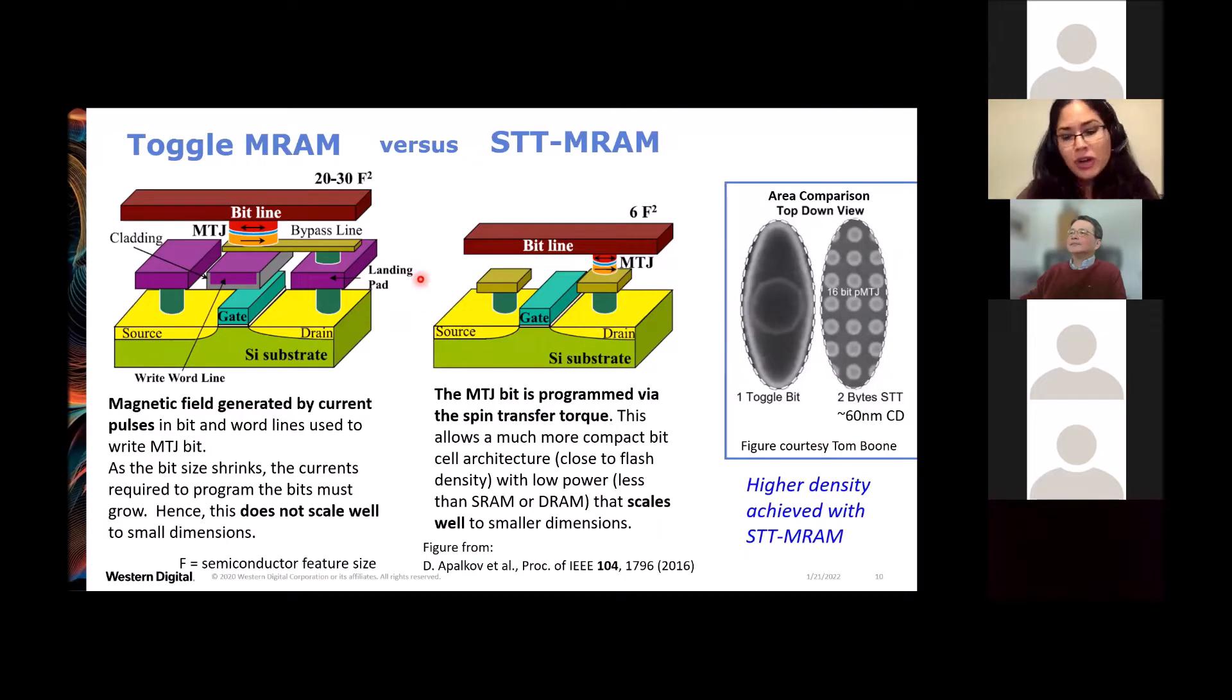So on this application for Toggle MRAM, they're still very active in making Toggle MRAM products now. In this technology, the magnetic field generated by current pulses in bit and word lines is used to write the magnetization in the free layer, to write the bit. This kind of writing scheme does not scale well. Later developed spin transfer torque MRAM uses spin transfer torque to write the magnetization in the free layer of the MTJ bit. This kind of write scheme does scale well. And it's STT MRAM that will move forward to achieve higher density. And you can see that here in this image, there are 16 perpendicular MTJ bits of STT MRAM in just the area of one Toggle MRAM bit.